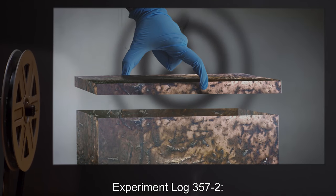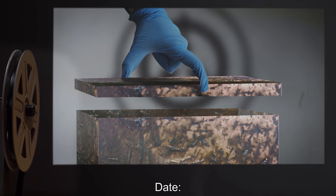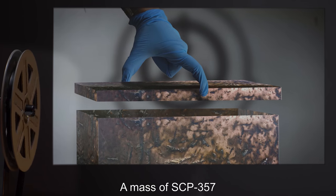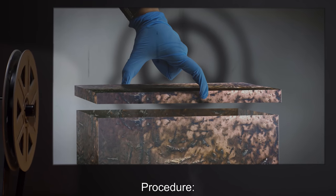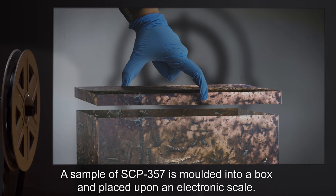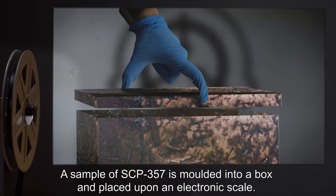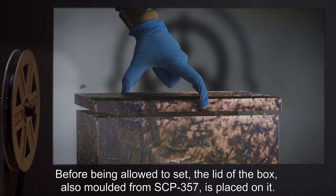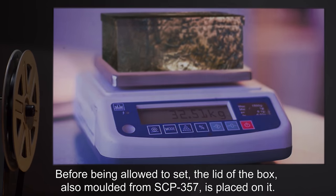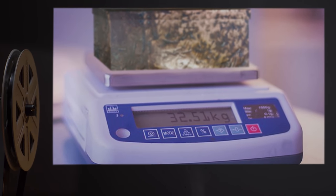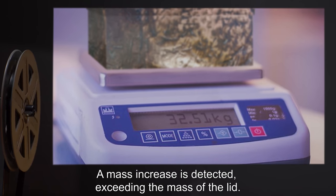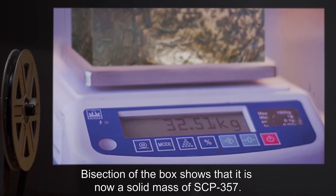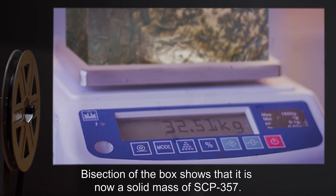Experiment Log 357-2. Date: Undisclosed. Subject: A mass of SCP-357. Procedure: A sample of SCP-357 is molded into a box and placed upon an electronic scale. Before being allowed to set, the lid of the box, also molded from SCP-357, is placed on it. Details: A mass increase is detected, exceeding the mass of the lid. Bisection of the box shows that it is now a solid mass of SCP-357.